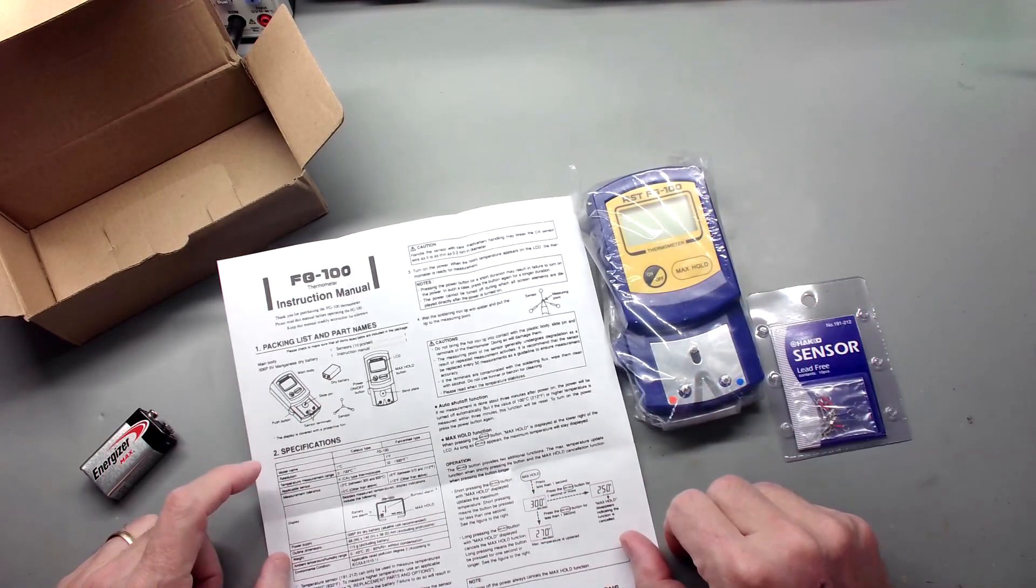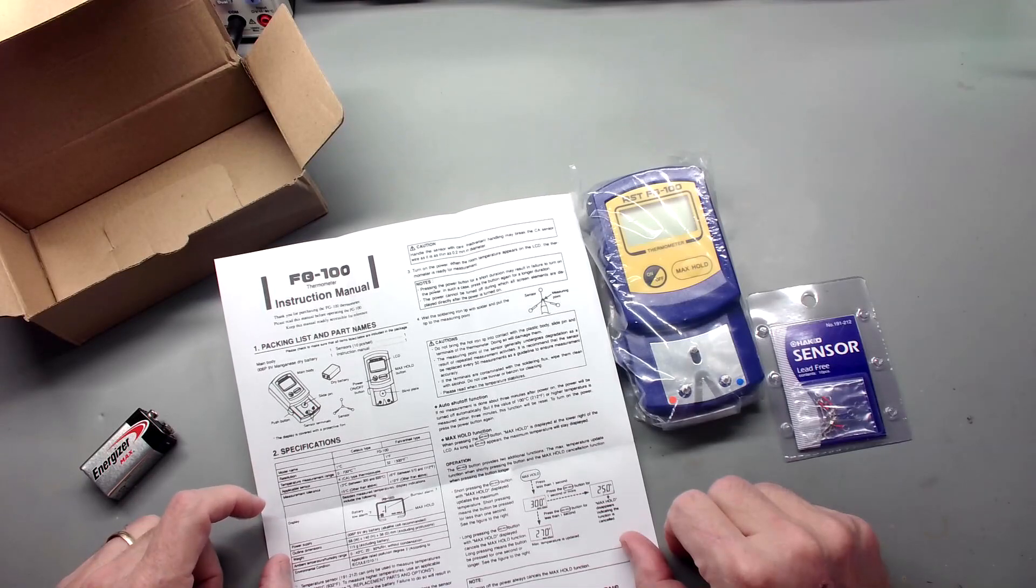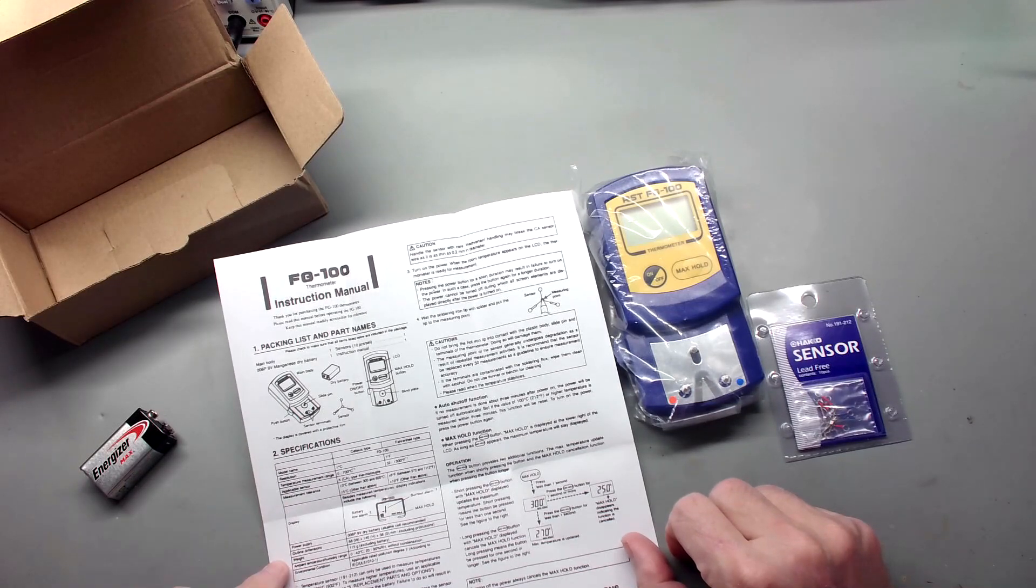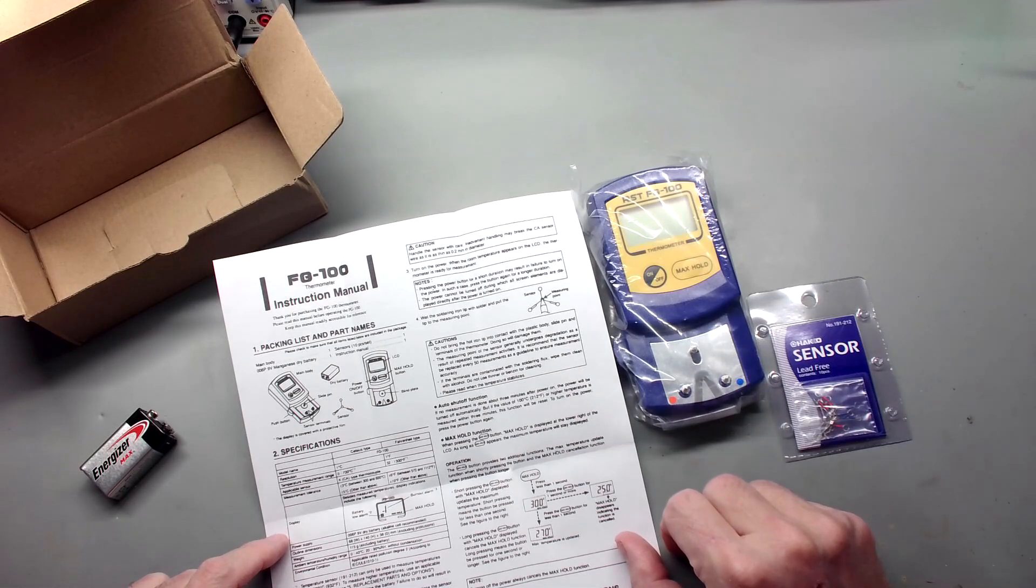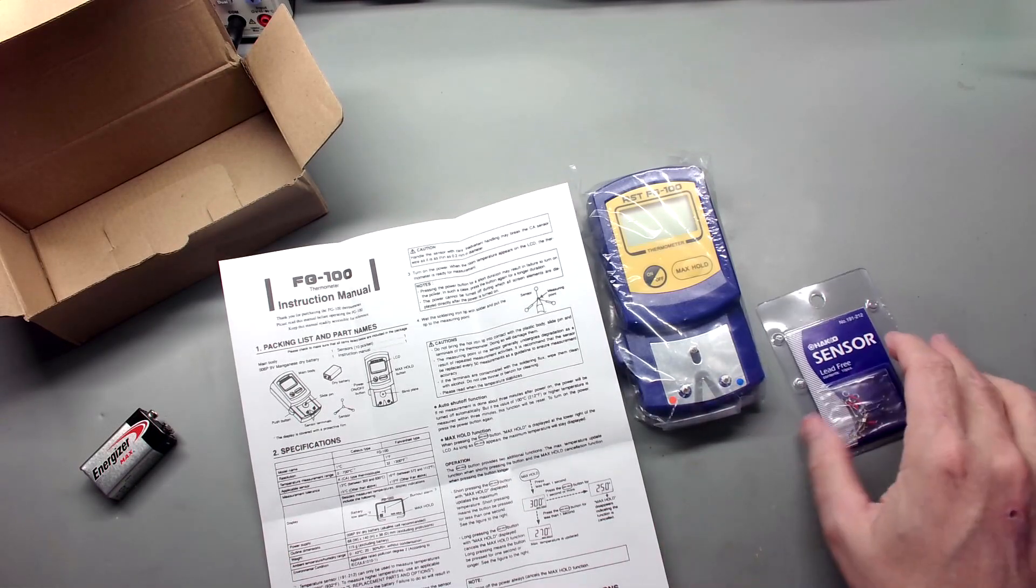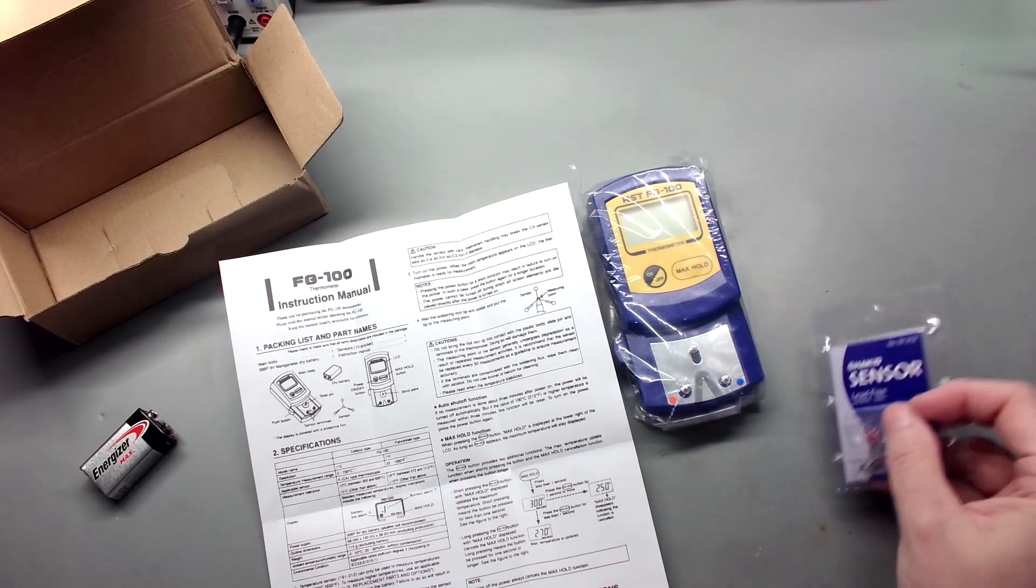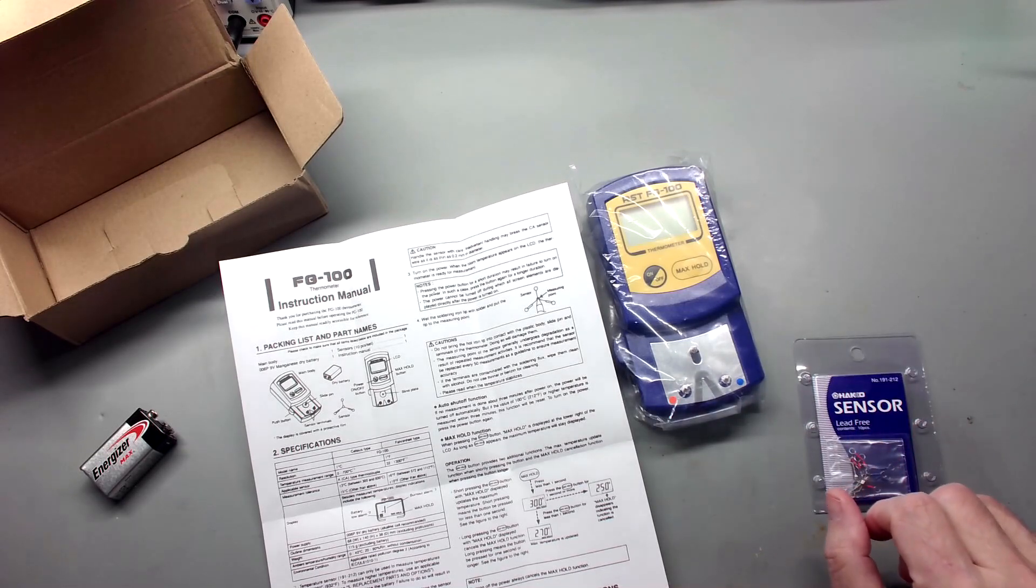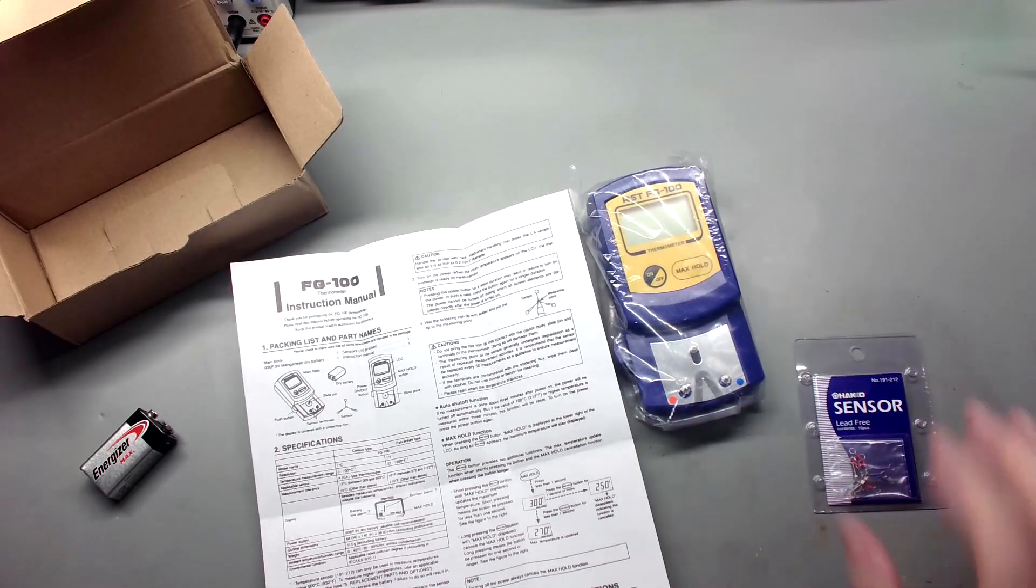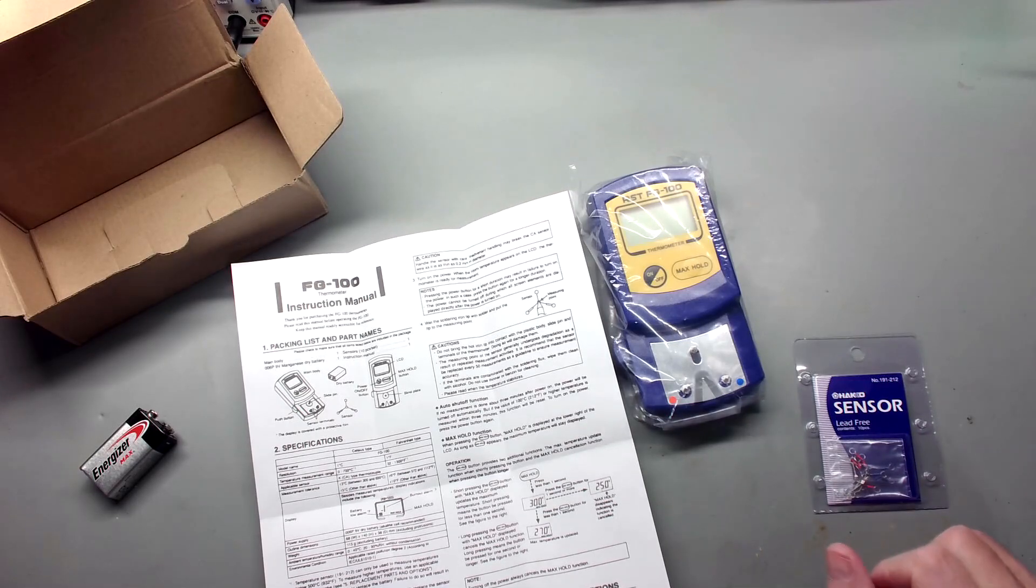Its resolution is one degree, either Celsius or Fahrenheit. Zero to 700 degrees C, 32 to 1300 Fahrenheit. Plus or minus 3C, plus or minus 6F. It's got a low battery alarm. One 9-volt battery. Temperature sensor 199212, that's what I have. Can only be used to measure temperatures below 500 degrees C. That's not a problem. Don't think I'm going to be soldering at almost 1000 degrees Fahrenheit anytime soon.